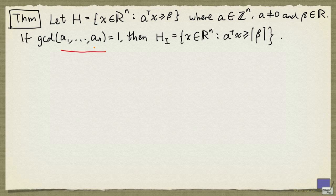Suppose that a1 up to an are relatively prime. That is, the greatest common divisor of these numbers is 1. Then the integer hull of H is given by this.